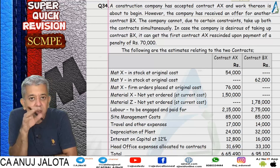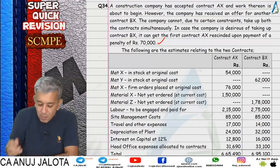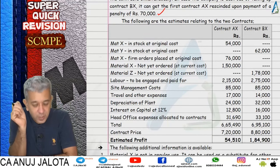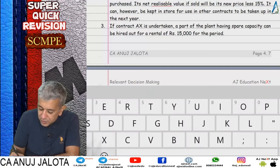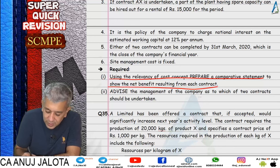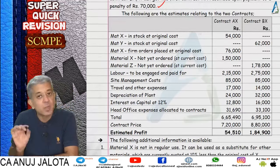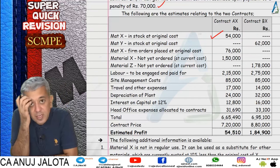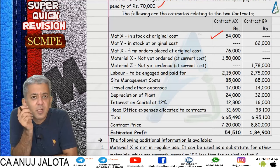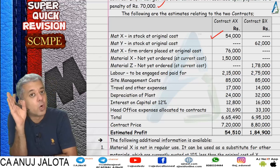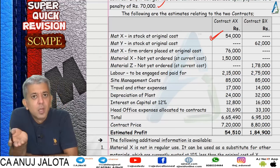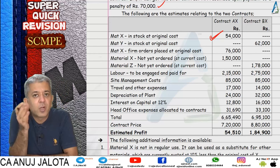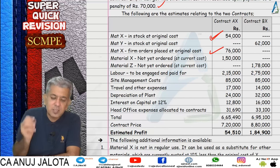If you cancel AX to accept BX, there is a penalty of 70,000 rupees. The question asks to show the net benefit resulting from each contract. For contract AX: material X was purchased and stocked. First lot is in stock - if we keep AX, we'd have to buy it for the other place at cost of 48,600. That became a relevant cost.